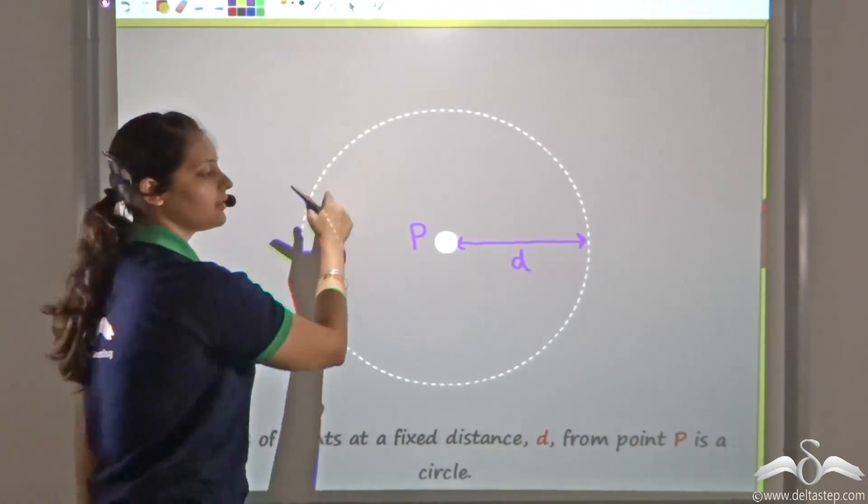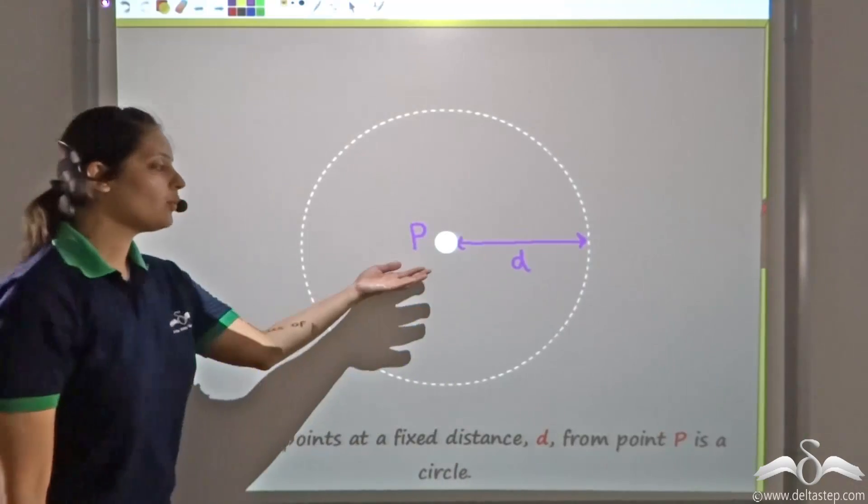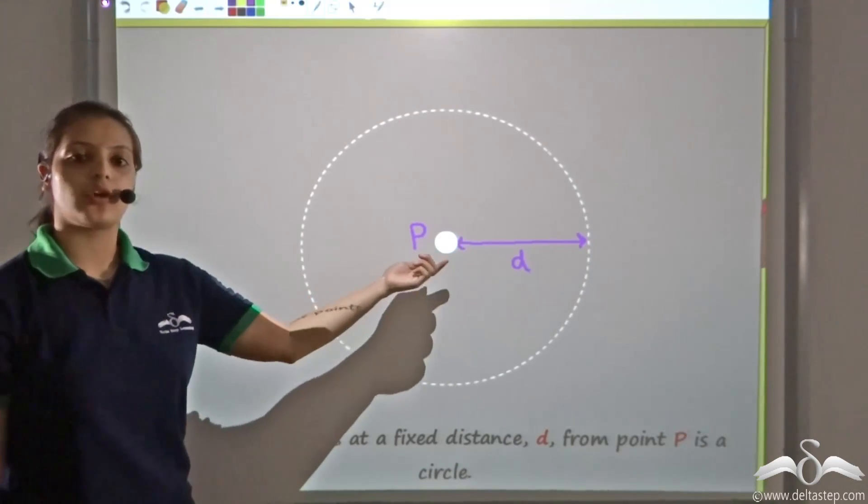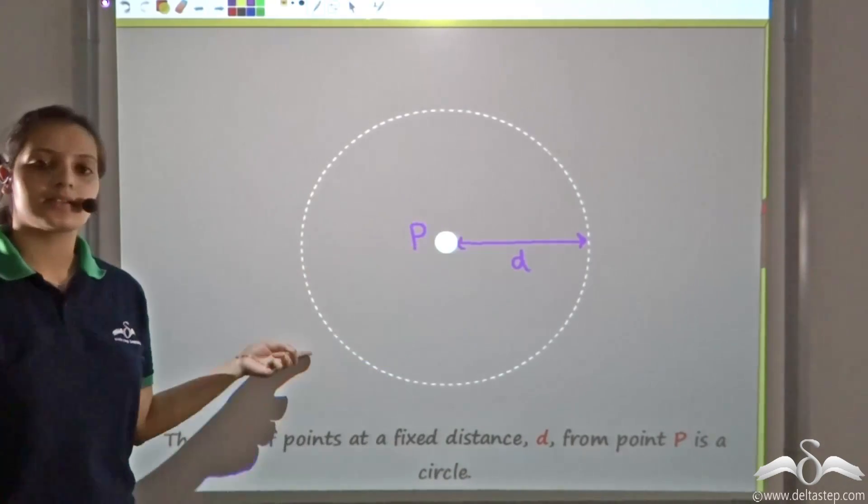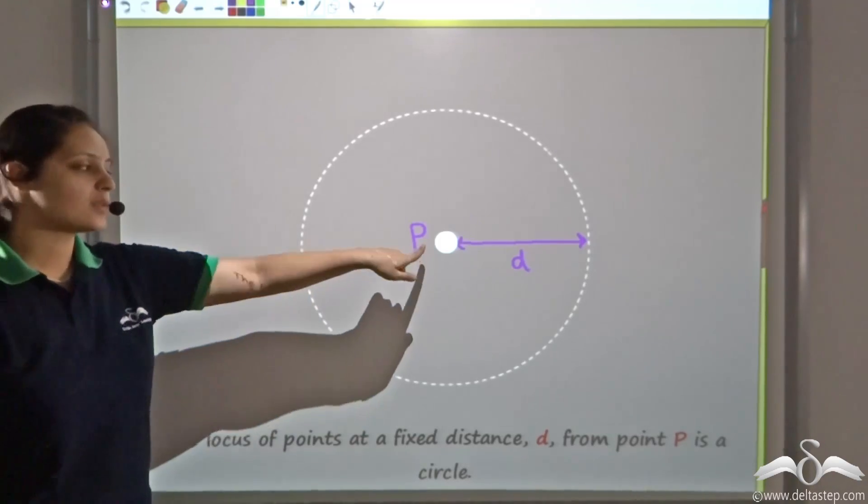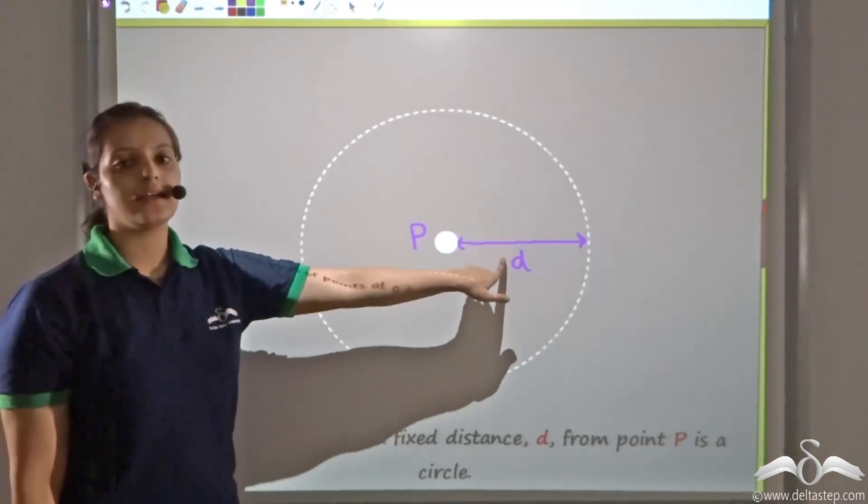Now this D distance becomes the radius. So all points at a fixed distance from a point gives me a circle which has P as its centre and D as the radius.